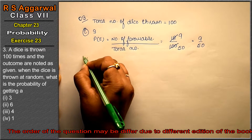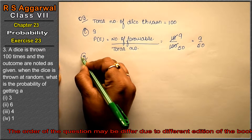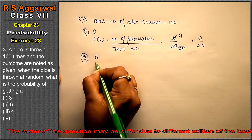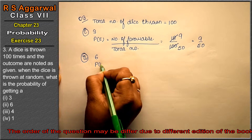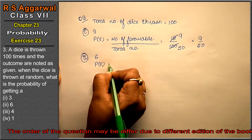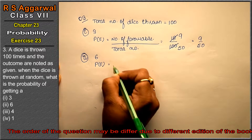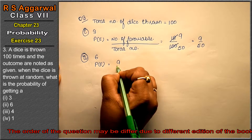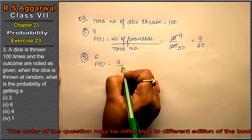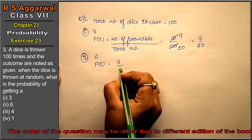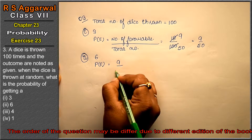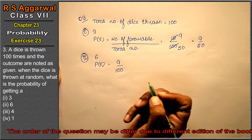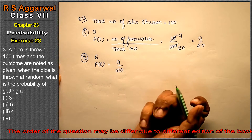In the second part, what is the probability of getting 6? Using the same formula, the frequency of getting 6 is 9, and the total is 100 times. That means 9 upon 100 is the answer.